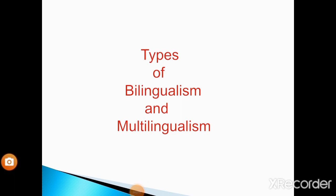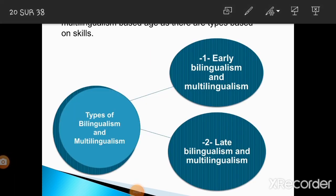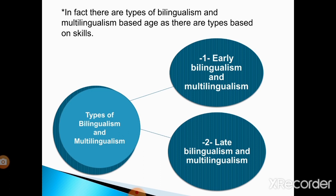Now we will move to the types of bilingualism and multilingualism. There are types based on age and types based on skills. When talking about learning more than one language, it is important to mention the critical sensitive period, which is the period in one's life from birth to puberty where language learning and acquisition happen easier and faster. This is because at this age the neurobiology of the brain is favorable for better language learning. Once people get older and go beyond the critical period, their brain becomes slower — this is why children learn languages better than adults.